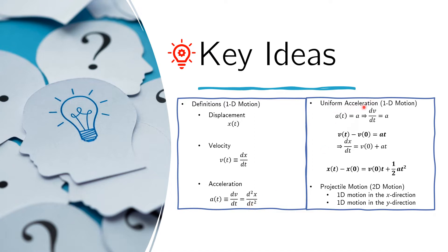In the case of uniform acceleration, we set the acceleration to some constant a. From the equation dv/dt equals a, if we integrate both sides from time equals zero to time equals t, we obtain v of t equals v of zero plus a times t. We can then replace v of t with dx/dt and integrate again from time equals zero to time equals t to obtain the displacement equation x of t equals x of zero plus v of zero times t plus one-half a t squared.